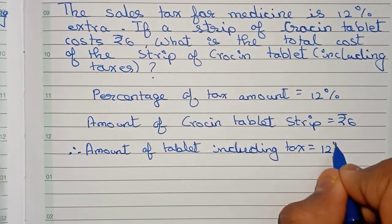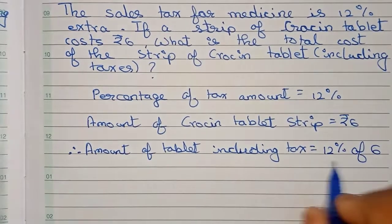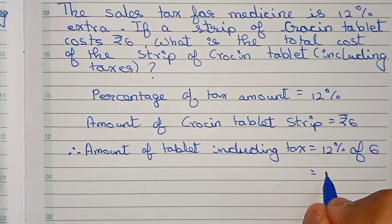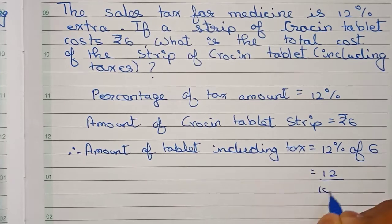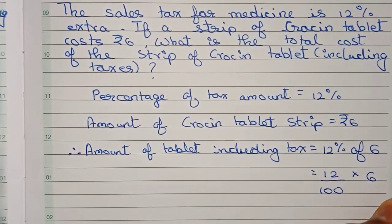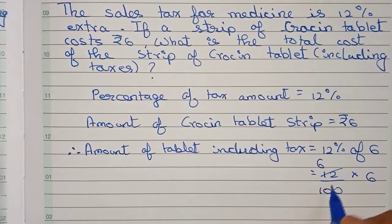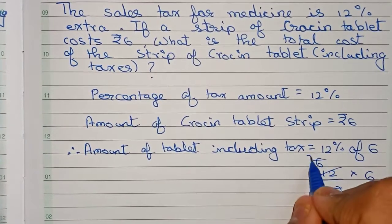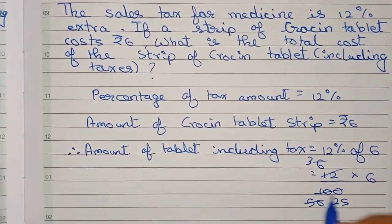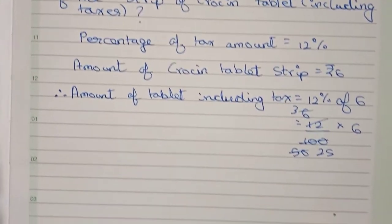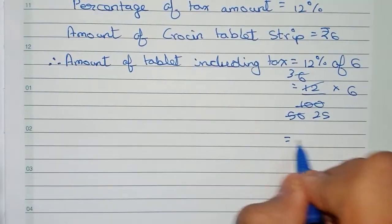So for that, we write 12% of 6. That will be equals to 12 by 100 into 6. So I cut 12 and 100 by 2, 6 by 15, cut by 2, 3 by 35. So it becomes 3 into 6 by 25.